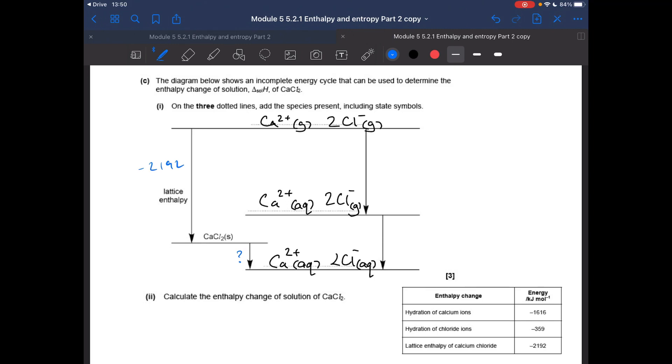And the hydration enthalpy, so my first arrow is for the hydration of the calcium ions, so your minus 1,616 goes there. And the chloride ions, it's minus 359 per mole, so it'll be minus 359 times 2.